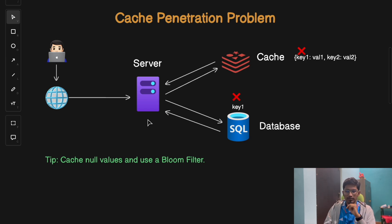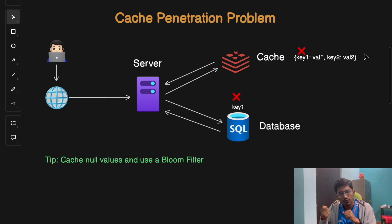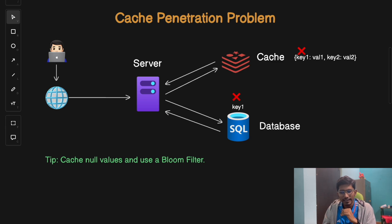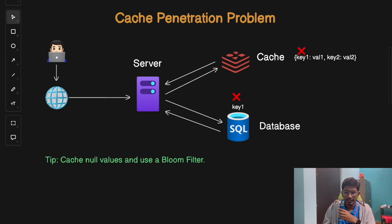To deal with cache penetration, you can cache a null value for non-existing keys. Set up your cache so that if something is not present in either the cache or the database, a null value is stored for that key — so the request terminates at the cache level. Alternatively, use a Bloom filter as a pre-check tool to determine whether a particular key exists in the database before hitting it.